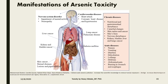When it comes to the manifestations of arsenic toxicity, it basically affects every part of the body. It affects the nervous system, leading to impairment of mental activity and different kinds of neuropathy. It causes heart diseases in the form of hypertension and heart attack. Arsenic also leads to different kinds of cancers such as liver cancer, lung cancer, and skin cancer. The kidneys may also be affected, leading to kidney and bladder cancer, and deposition in the pancreas can lead to diabetes mellitus.